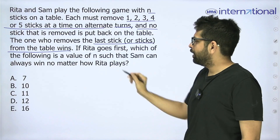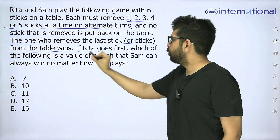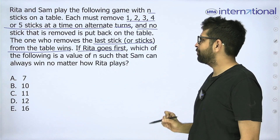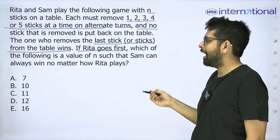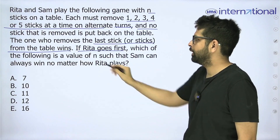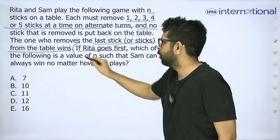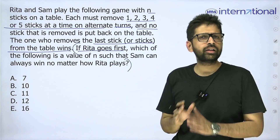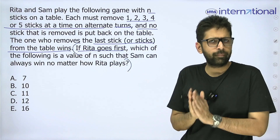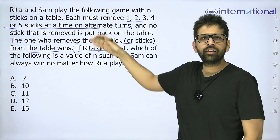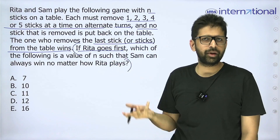Now, if Rita goes first, which of the following is a value of N such that Sam can always win no matter how Rita plays? We'll keep that on hold for a minute and first try to understand what this game is about.